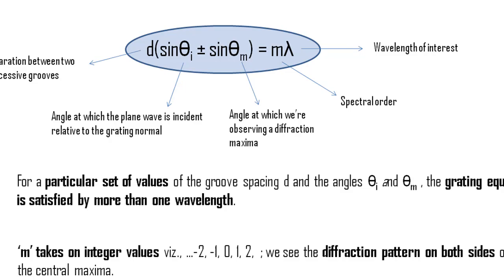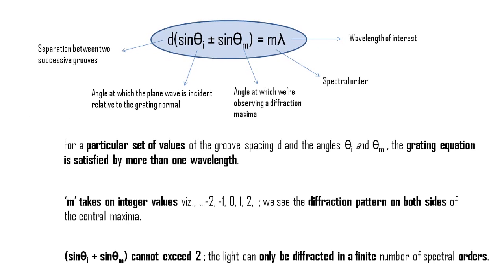The grating equation reveals some important points. For a particular set of values of the groove spacing d and the angles theta i and theta m, the grating equation is satisfied by more than one wavelength. In fact, there may be several discrete wavelengths which, when multiplied by successive integers m, satisfy the conditions for constructive interference.